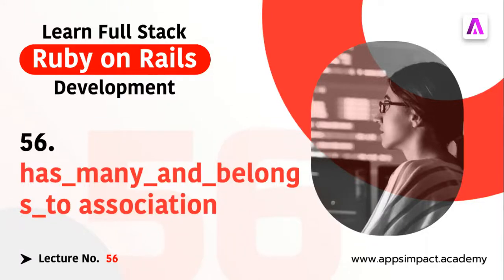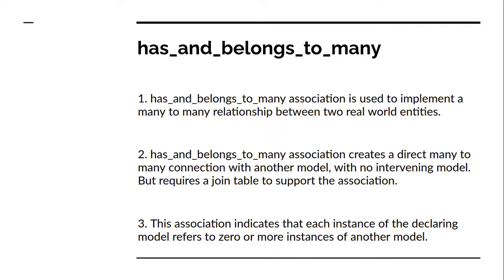Hey guys, welcome back. This is lecture number 56 of our boot camp series. In the last lecture we discussed about belongs_to association and implemented a one-to-many association between students and blocks. In this lecture we're going to discuss about has_and_belongs_to_many association in detail and see how this association works. Has_and_belongs_to_many is used to implement a many-to-many relationship between two real world entities, and it creates a direct many-to-many connection with another model with no intervening model, but it requires a join table to support the association.